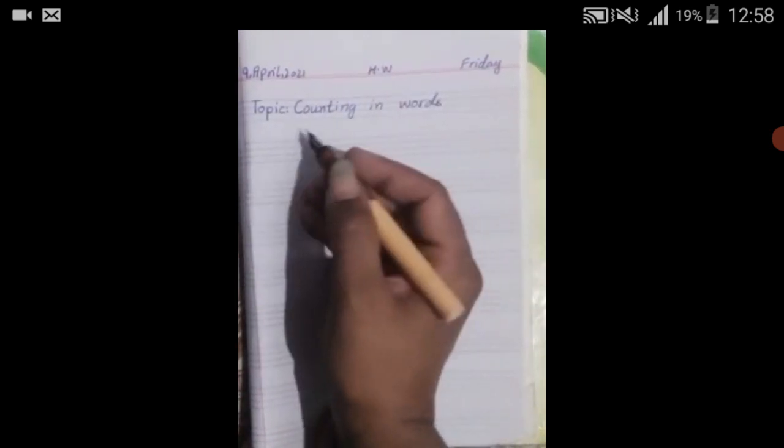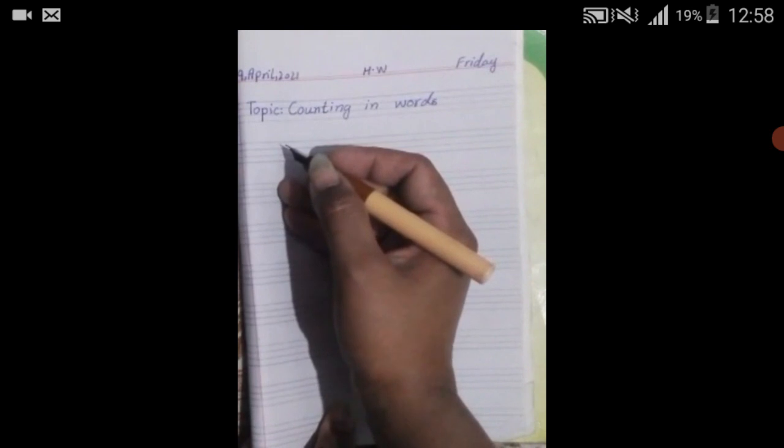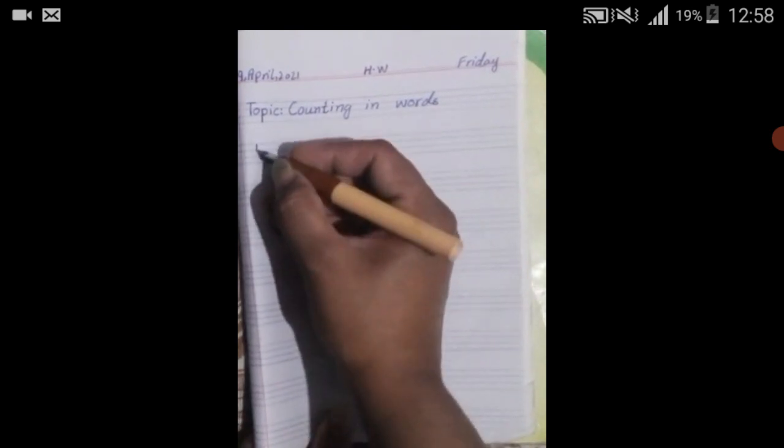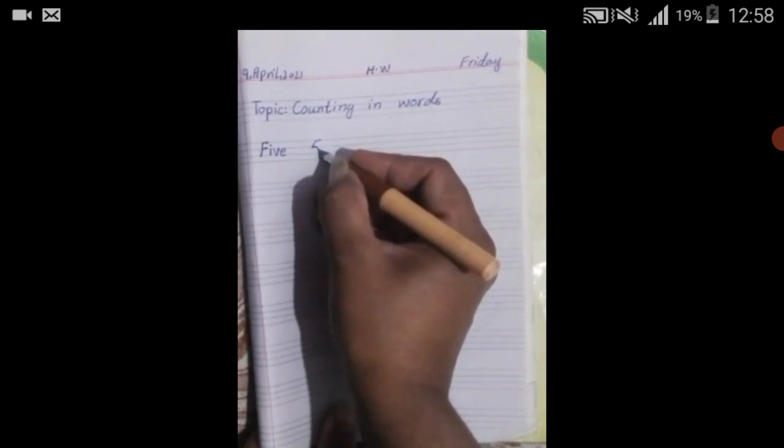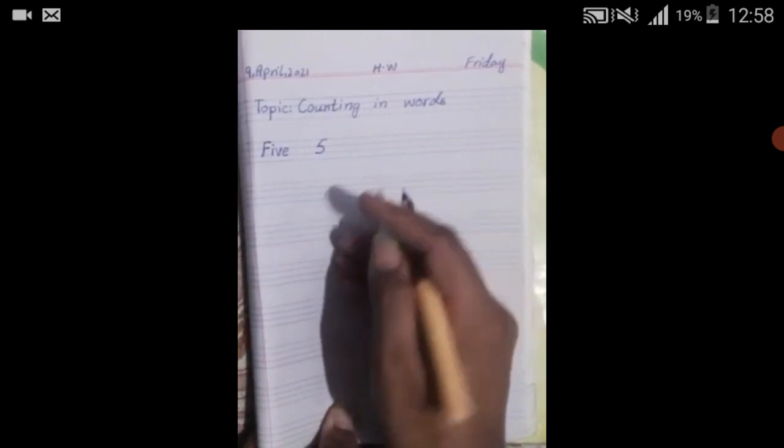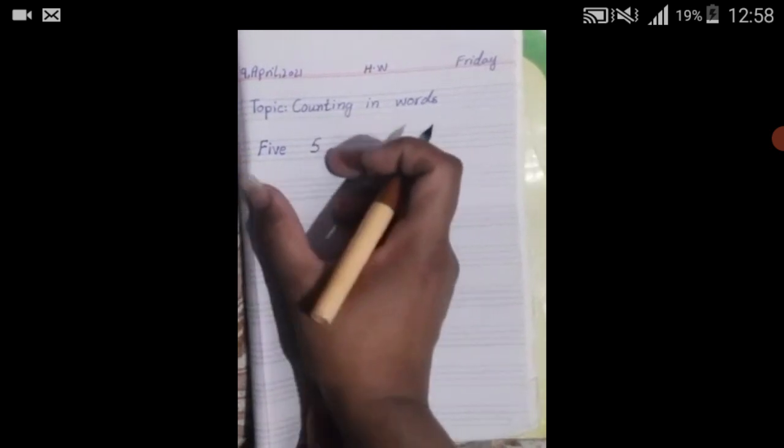Homework Friday, and topic counting in words: 1, 2, 3, 4. You have written these. Now you will write 5: F-I-V-E, five. This is your homework: 4, 5. You will write these and learn them.